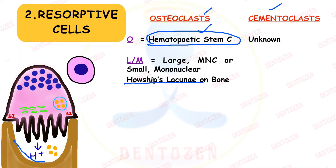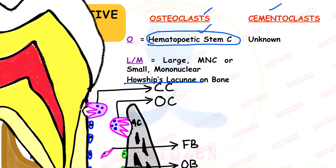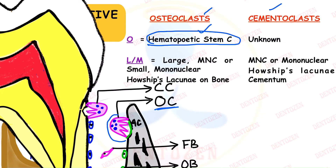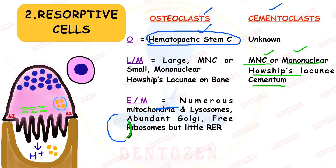Where osteoclasts rest on bone and degrade it, that concavity is called Howship's lacuna. Cementoclasts similarly lie on the cementum surface in Howship's lacuna. Both cementoclasts and osteoclasts can be multinucleated or mononuclear, and cementoclasts show Howship's lacuna over the cementum surface as seen here.